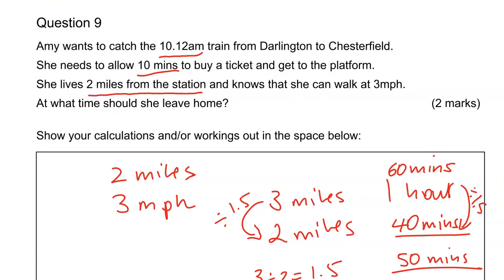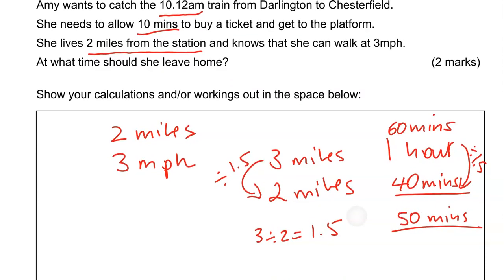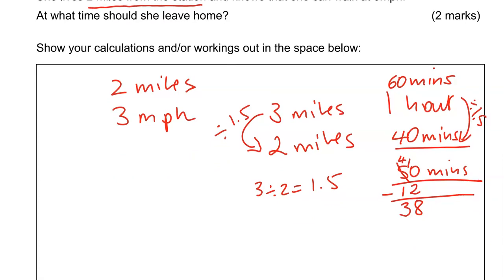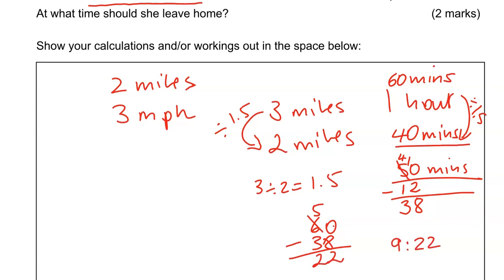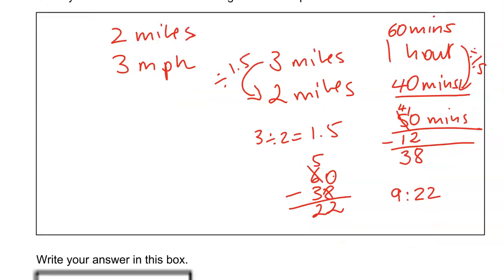The train leaves at 10:12 am, so we need to work backwards. Going back to 10 am, we take away 12 minutes — borrowing 1, 10 take away 2 gives us 8, 4 take away 1 gives us 3 — so 38 minutes before 10 am. 60 take away 38 is 22, so that is 9:22 am. She should leave home at 9:22 am.